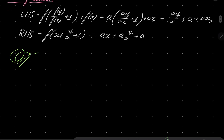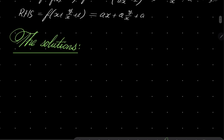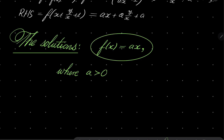The solutions of our equation are the linear functions f(x) = ax, where a is any positive constant. That closes our problem. Truly a beautiful functional equation — a bit unusual because the way of showing injectivity was not so obvious. Thank you very much for watching. I hope that you've learned something new this time, and I will see you next time. Goodbye.